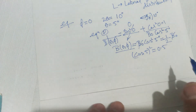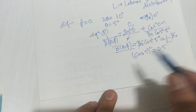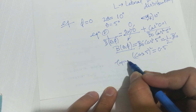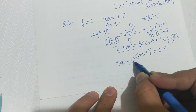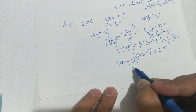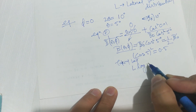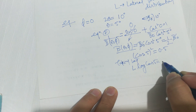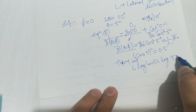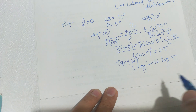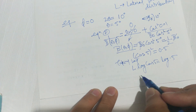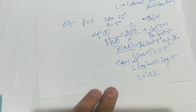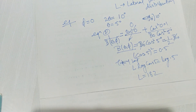To solve this, we take the log of both sides. Taking log, we get L times log(cos 5°) equals log(0.5). On solving, you get L is equal to 182. Thank you.